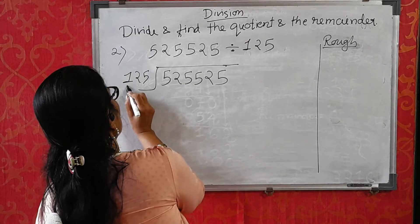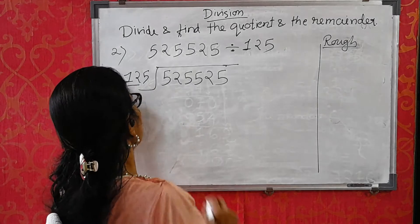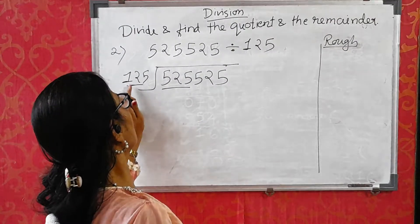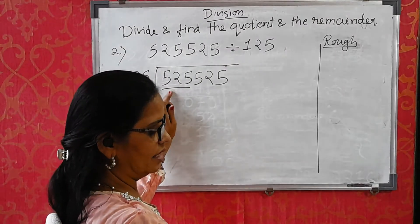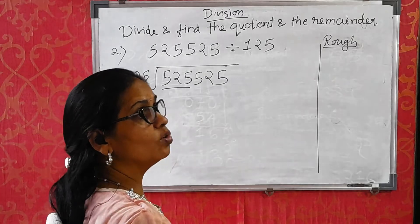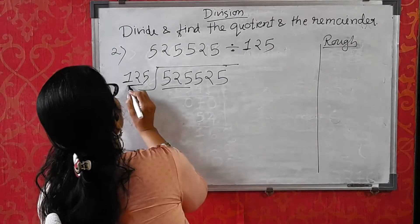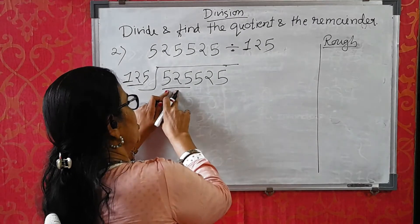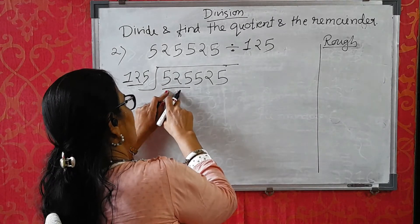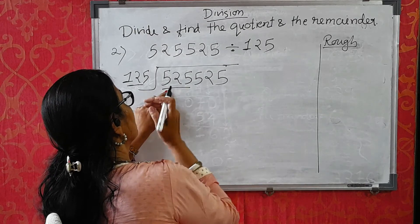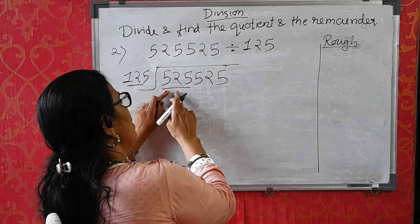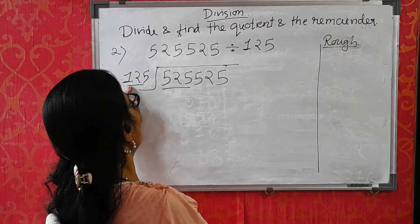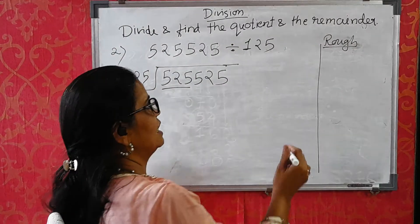Here, you know the 12 times table. The divisor has 3 digits, so take 3 digits from the dividend — here 525. These 3 digits are bigger than the divisor 125. Now, I don't know the 125 table, so I use the 12 table. I take 2 digits from the divisor and 2 corresponding digits — here 52. In the 12 table: 12×4=48 and 12×5=60, which is bigger than 52. So we take 12×4=48. This means we try 125×4=500 directly.